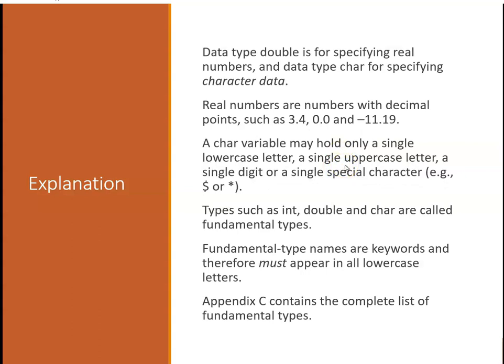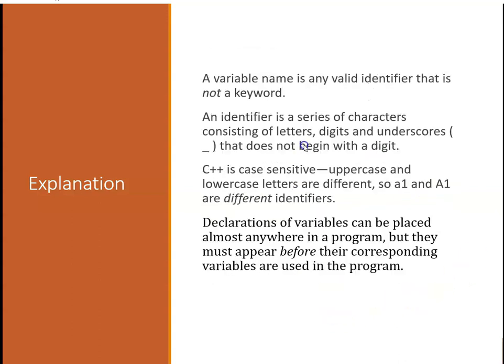For floating point numbers or real numbers, you use the data type double. For characters, you use the data type char. Real numbers are numbers with decimal points, such as 3.4, negative 11.19, etc. A char may only hold a single lowercase letter, a single uppercase letter, a single digit, or a special character. Int, double, and char are called fundamental types. Fundamental types are keywords and must appear all in lowercase, and you can't use them for anything else. The book Appendix C contains the complete list of fundamental types.